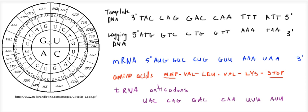However, it is good to remember that the genetic code is unambiguous, which means that for any given codon, there's only one amino acid it can be. In the next video, we'll talk about mutations.